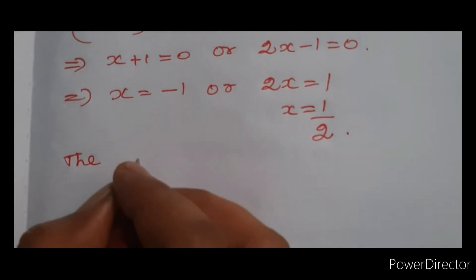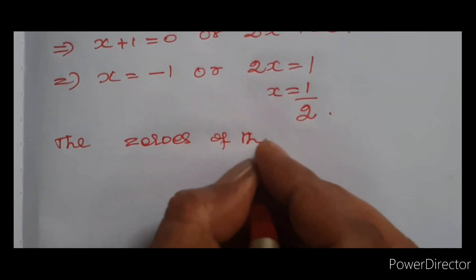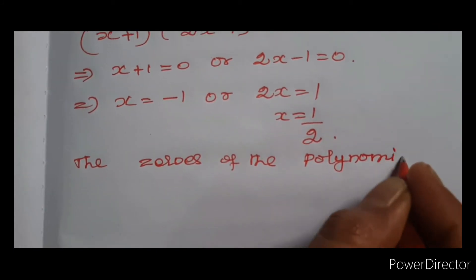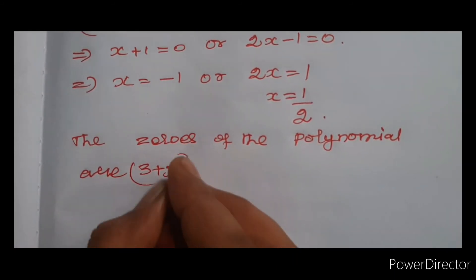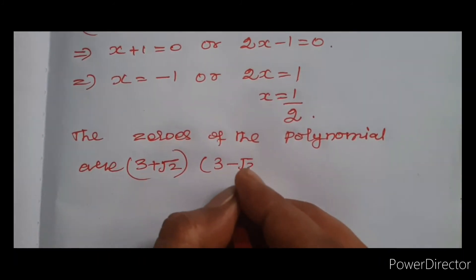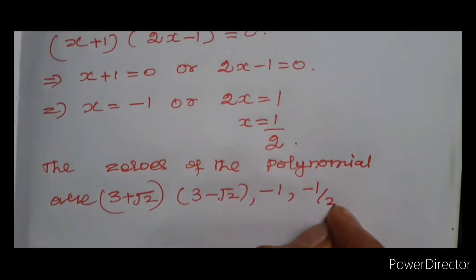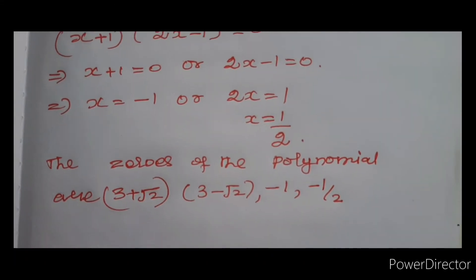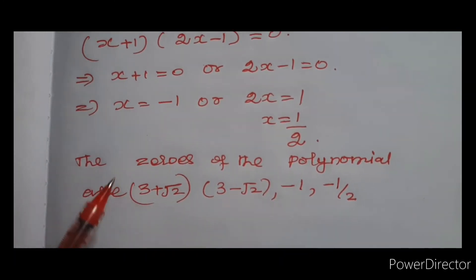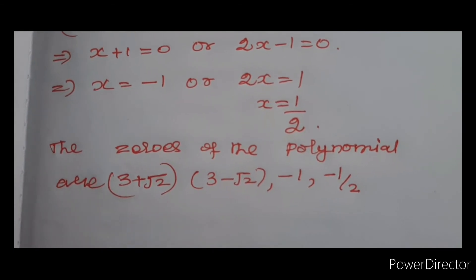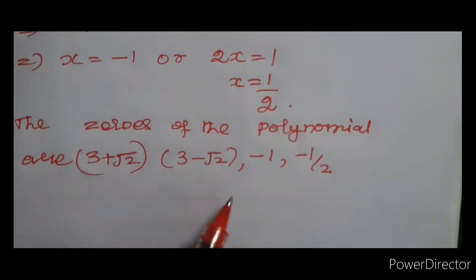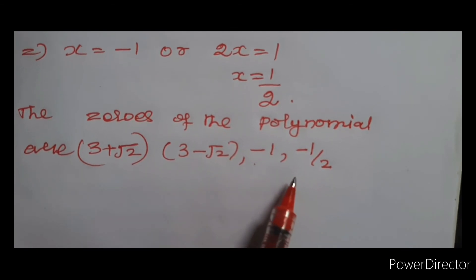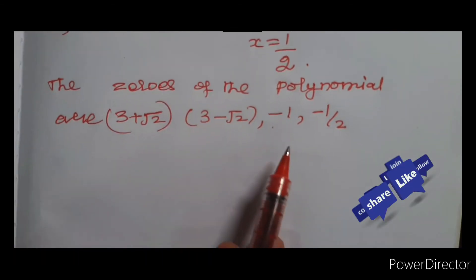Therefore, all the zeros of the polynomial are: 3 plus root 2, 3 minus root 2, minus 1, and 1 by 2. You have to write all four zeros to get full marks. Thank you for watching. Please like, comment, and subscribe.